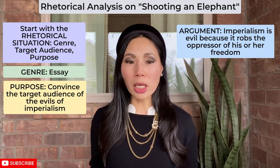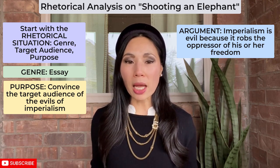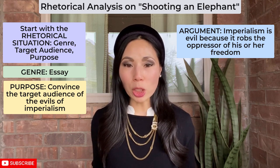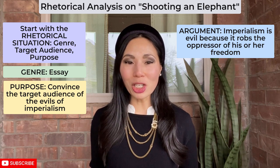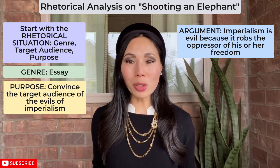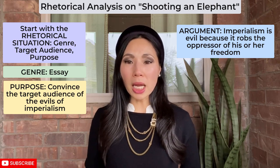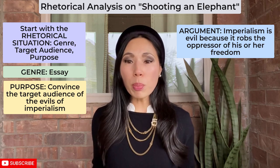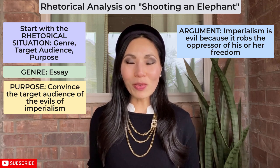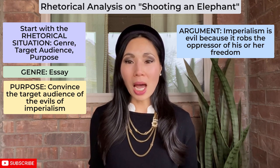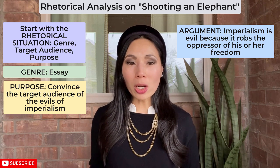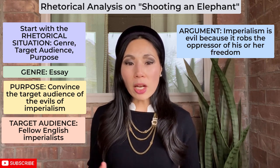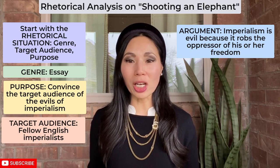Furthermore, as the narrator comes across the man whom the elephant kills, he says: 'Never tell me, by the way, that the dead look peaceful. Most of the corpses I have seen look devilish.' Now, who would be under the impression that all these Burmese who are dying look peaceful? Sounds like an observation intended to overlook the horrors of imperialism — and who would be doing that? The British. Also, the narrator makes plain that this is not just his experience. He reminds the reader that he had to think over his problems in the utter silence that is imposed on every Englishman in the East, and that feelings like these are the normal byproducts of imperialism. 'Ask any Anglo-Indian official.' Clearly his target audience is the English — his fellow officers or any Englishman who continues to believe in imperialism as an enlightening measure and enforces colonial power out of what they saw as moral obligation and Christian duty.